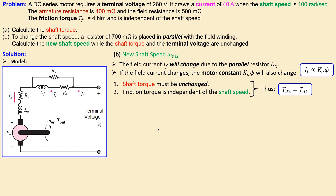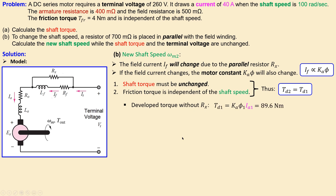Even though we are going to a new shaft speed, the friction torque remains constant because the problem states it is independent of shaft speed. So the developed torque without the parallel resistor — motor constant 1 times armature current 1 (2.24 times 40 amps) — equals the developed torque with the parallel combination, which must also be 89.6 newton meters.